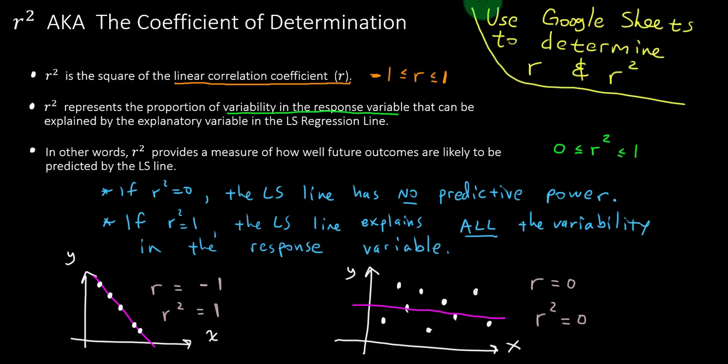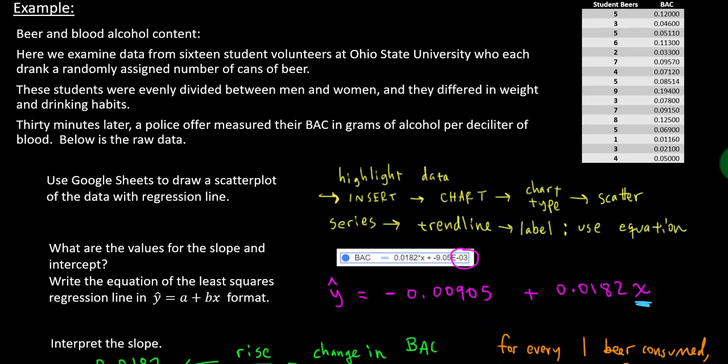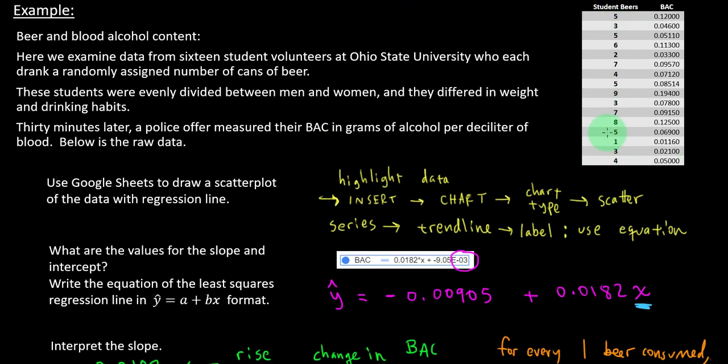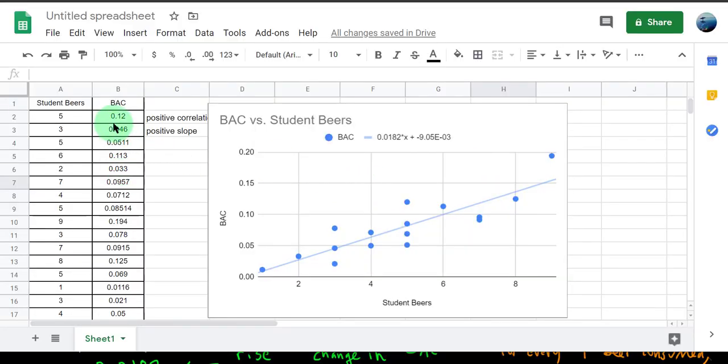So I'm going to rely on our previous example from the previous video to illustrate this. And I believe if I scroll up, I can see some of the highlights here. In this example, we had the number of beers consumed and the blood alcohol content. And I showed you where to go click to find that. So in that same little zone, we want to go and ask Google Sheets to show r square. And let me just go show you how to do that.